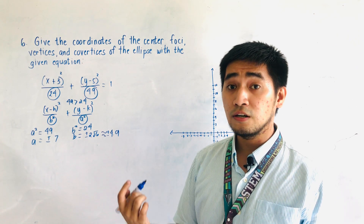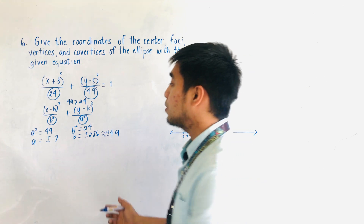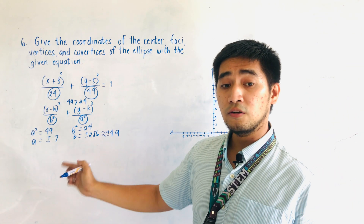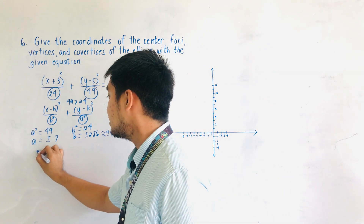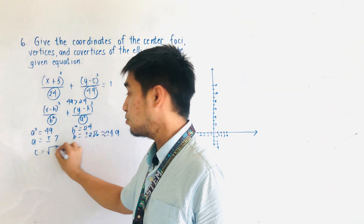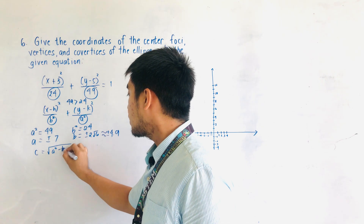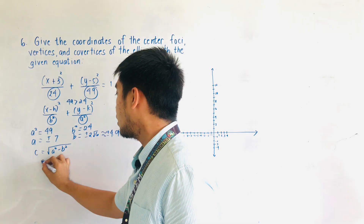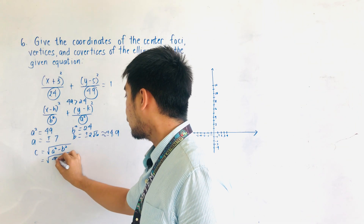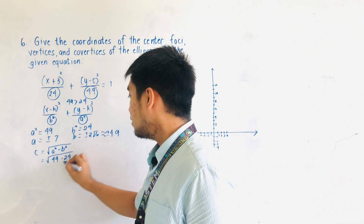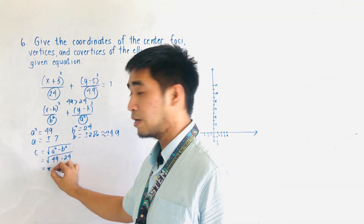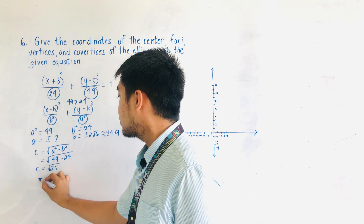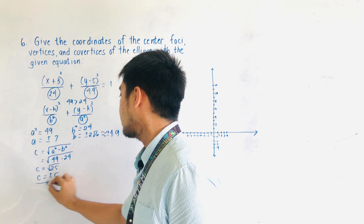We are now ready to get the value of c for the foci. Remember that a contains the vertices, b contains the co-vertices, and c is for the foci. Therefore, c is equal to the square root of a squared minus b squared. That gives us the square root of 49 minus 24, which is the square root of 25. Therefore, c is equal to plus or minus 5.